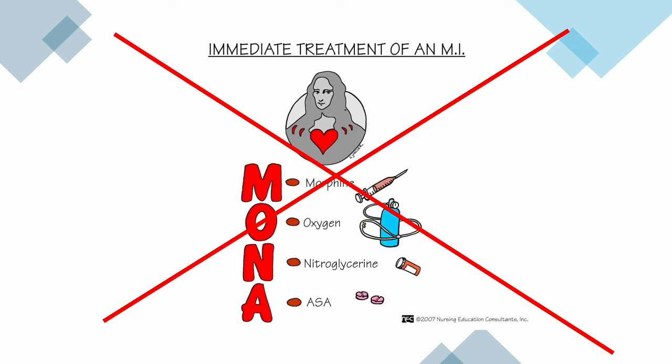The well-known mnemonic MONA has historically been utilized to recall the medical management of acute coronary syndrome, representing morphine, oxygen, nitrates, and aspirin. However, current guidelines do not universally recommend oxygen and morphine for all patients with ST elevation MI.